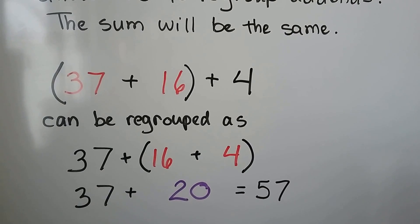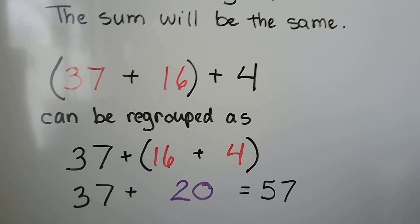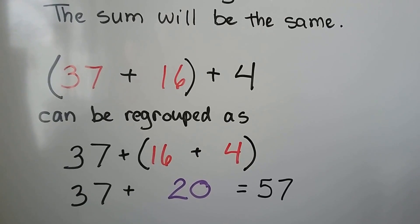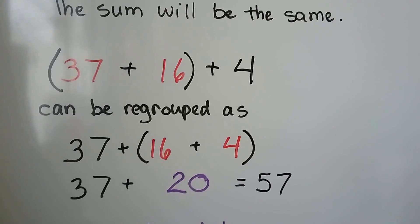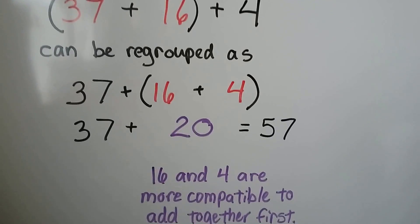If we're adding 37 plus 16, we add them first because they're in parentheses, and then we add 4. But it can be regrouped as adding the 16 and 4 together first because they're more compatible.